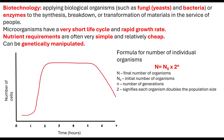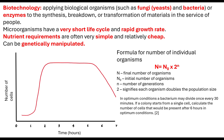Capital N is the final number of organisms, N0 is the initial number of organisms, n is the number of generations, and 2 signifies that each organism doubles the population size. For example, in optimum conditions a bacterium divides once every 30 minutes. If we start with a single cell and continue for 6 hours, there are 2 thirty-minute intervals per hour, so 6 hours times 2 gives us 12 generations. Plugging those numbers in: 1 times 2 to the power of 12 gives us 4,096 cells after 6 hours.